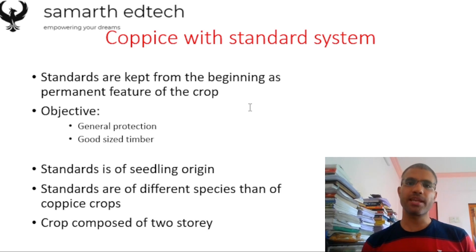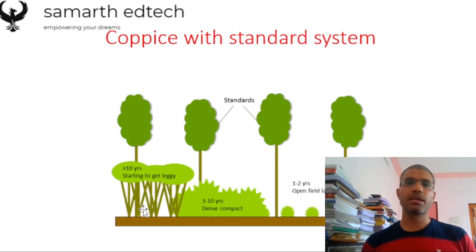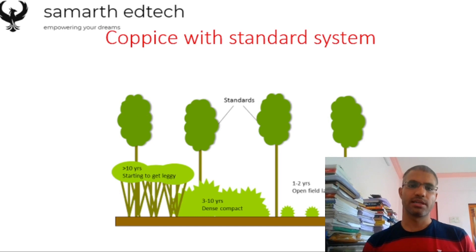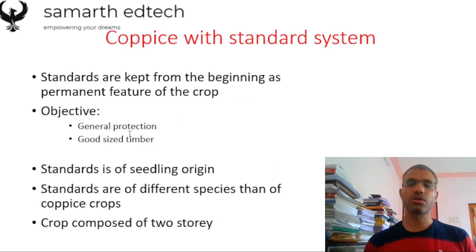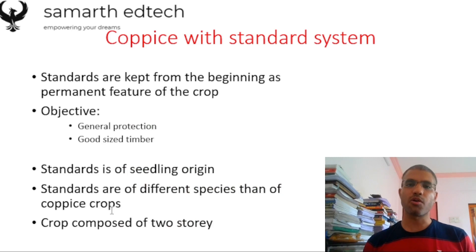In the Coppice with Standards System, standards are kept from the very beginning as a permanent feature of the crop. The entire forest is not cut down — only certain parts are cut down and most of the trees remain. The remaining trees are called standards and from the cut trees new shoots start coming up as coppices. You can have two storeys here: the first storey of standards and the second storey of coppice origin. The objective is general protection of the trees as well as to have good-size timber. Standards are of seedling origin — they come directly from seeds and not from the coppice.